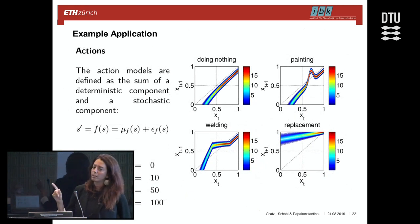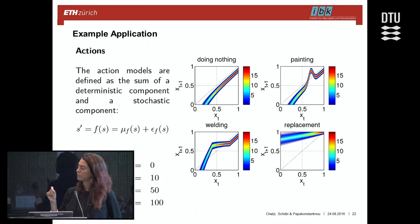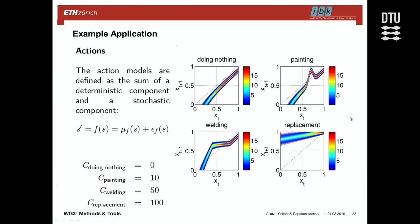We also need transition or action models, which describe the effect of a specific action on the state of the system. This is a conceptual example modeling nonlinear processes: doing nothing allows the system to deteriorate; a minor intervention like painting only acts in a specific range and may do nothing under significant deterioration; a more severe intervention affects a broader range of states; and replacement returns the system to its original state. All of these actions come with their own dedicated costs.